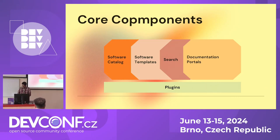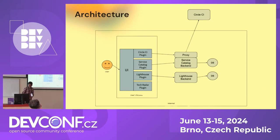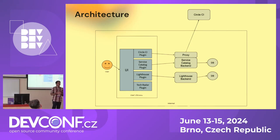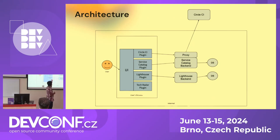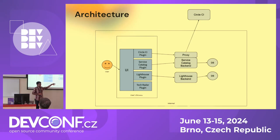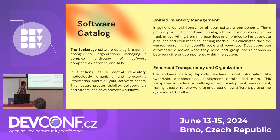Before going into the software catalog, let's look at the Backstage architecture. In Backstage, you get a centralized UI and you can integrate plugins. For example, you can integrate a Splunk plugin or a Kubernetes plugin. You get a unified UI, all these plugins have a backend, and that's the overall architecture.